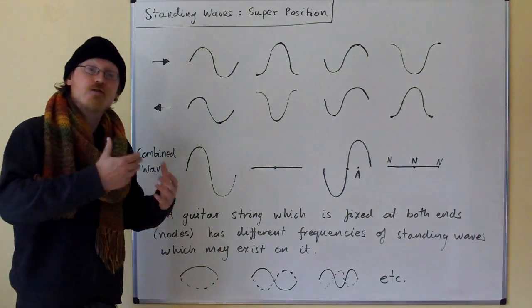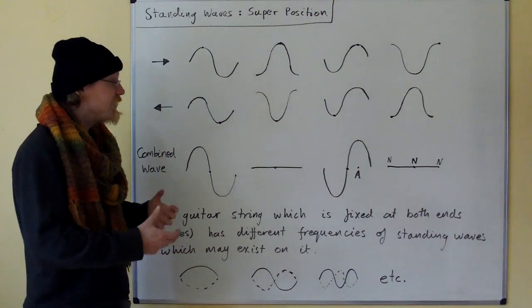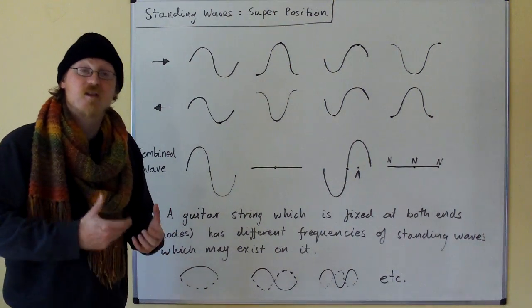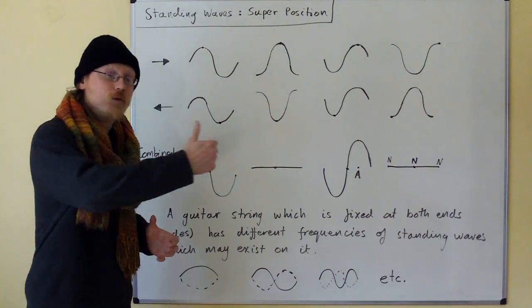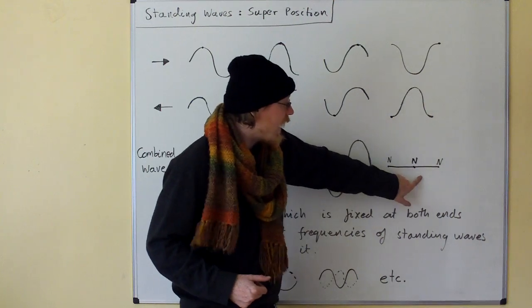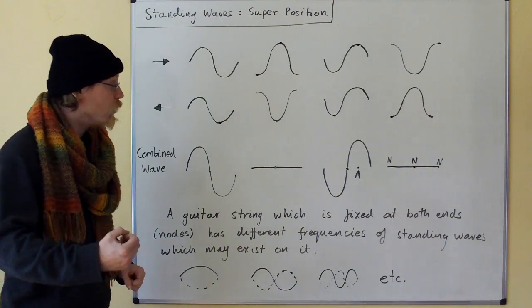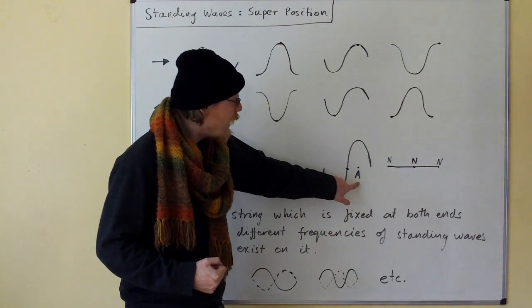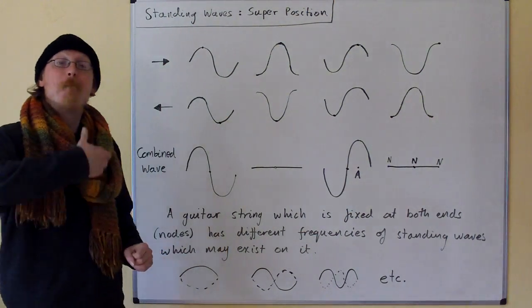Rather than a traveling wave, we're getting a thing called a standing wave. The standing wave is larger than the traveling waves that make it and it does not move through the medium. Instead, you have points at each end and in the middle which are called nodes, and these do not move at all.